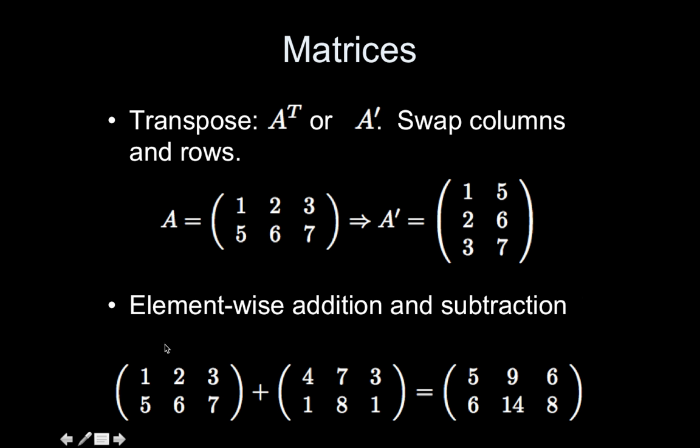Addition is easy. You just do element-wise addition and subtraction. So you can check my math here. If you take the one, one element in the first row, first column, it's one, add that to the same element of the second matrix, four, and you get five.